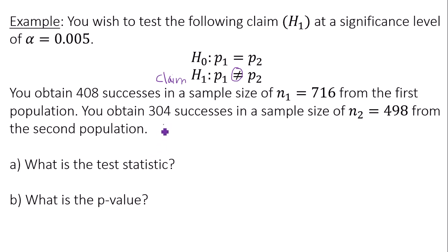Group one, the number of successes is 408, and the sample size is 716. Group two, the number of successes is 304, and the sample size is 498.